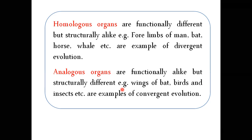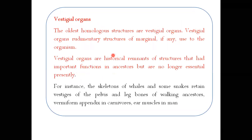Structures that are functionally the same but structurally different are analogous organs — associated with convergent evolution. Homologous organs are associated with divergent evolution.